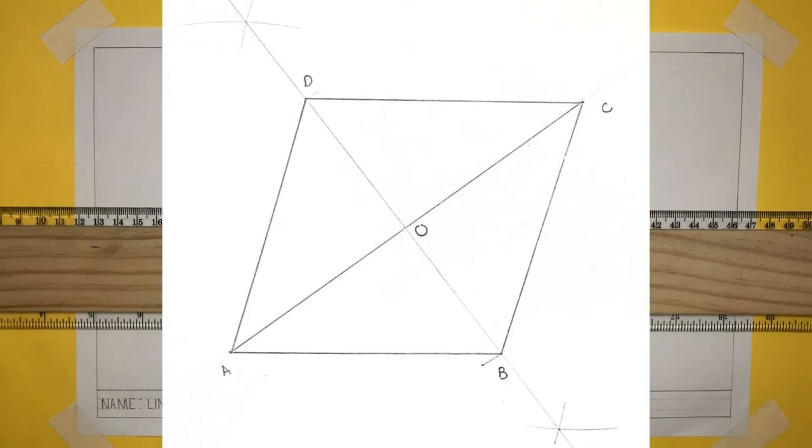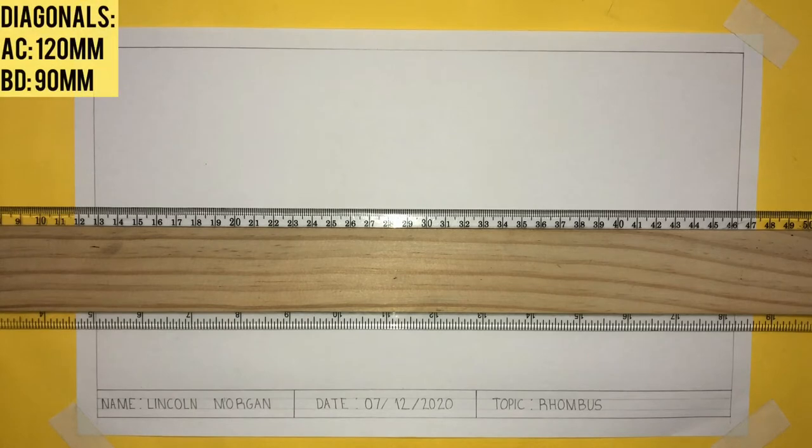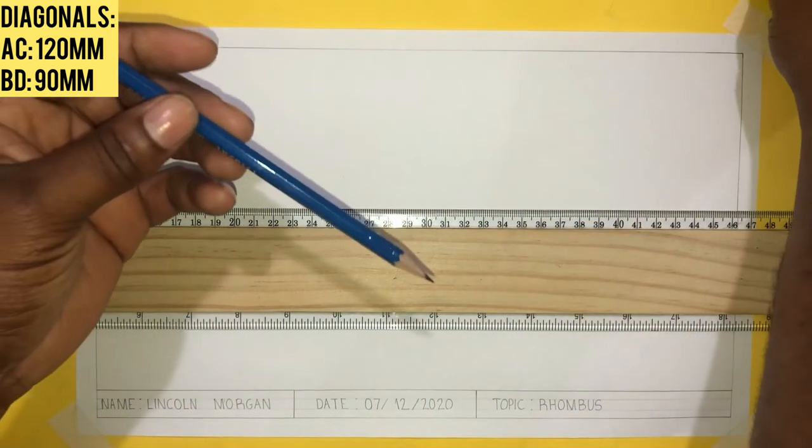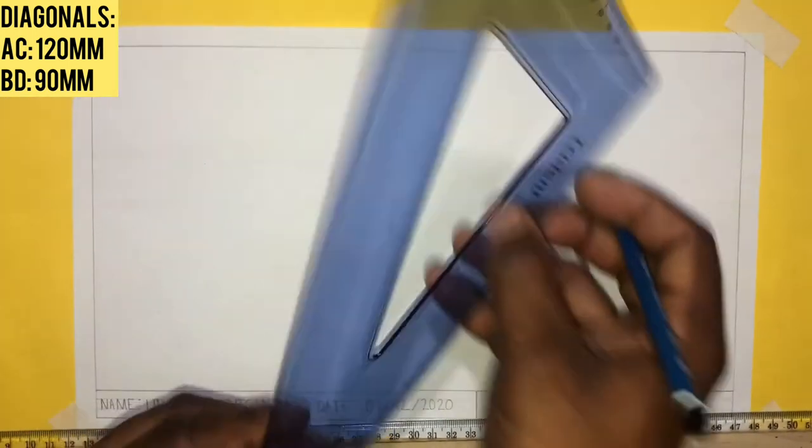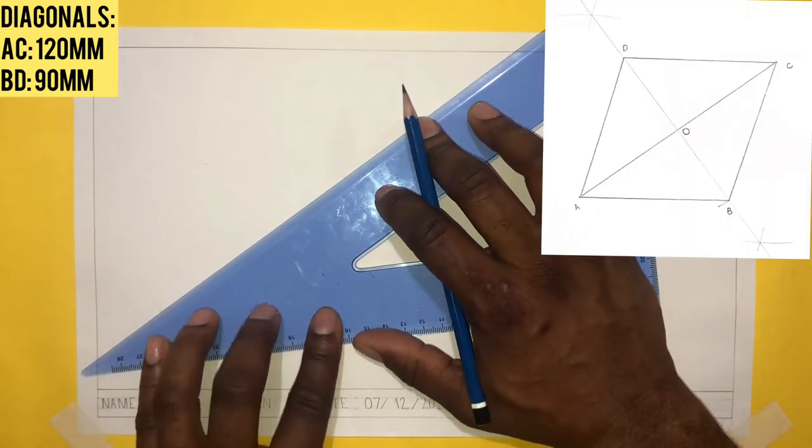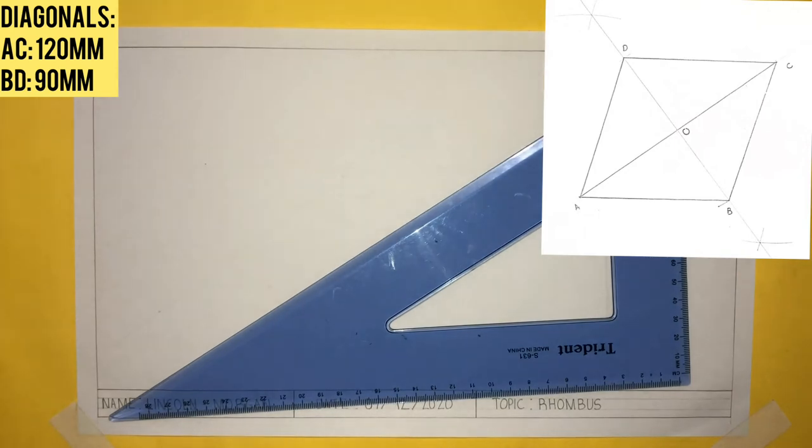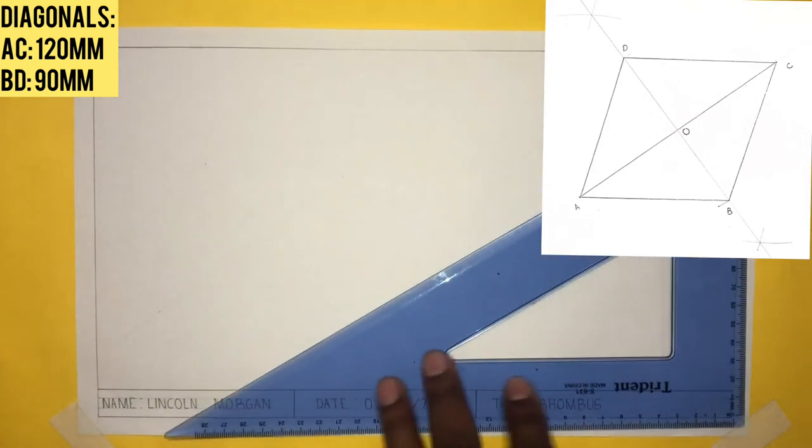I will now construct a rhombus given two diagonals. The longest diagonal is 120mm and the shorter diagonal is 90mm. I will first draw my longest diagonal at 120mm. I will now outline 120mm on this construction line.